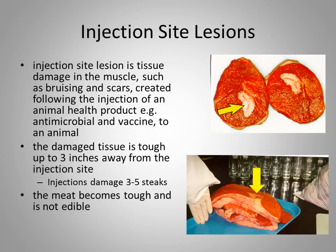When we do these injections, we damage not only one steak, but we can damage up to three to five steaks. On the bottom picture, you can see there are five steaks from the top butt of an animal where it was injected at the top hip, and the scar tissue damaged all those steaks. This meat then becomes tough and is not edible.